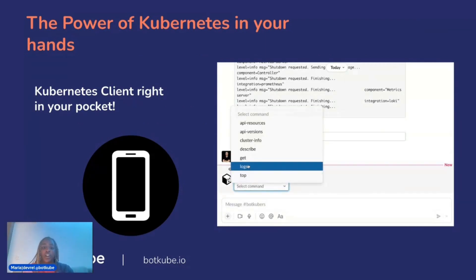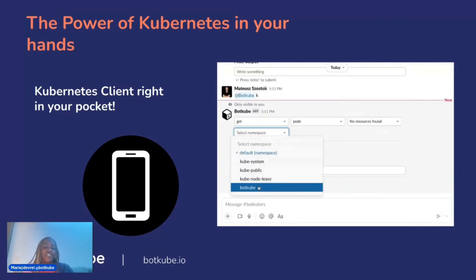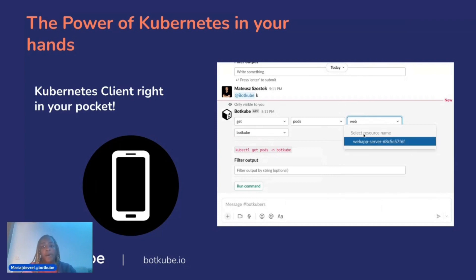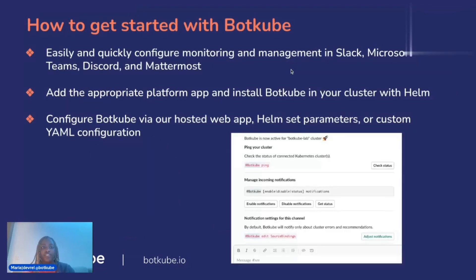Finally, because Botcube is linked into all major messaging platforms, you're able to take it anywhere — whether that's a concert, Starbucks, or anything else. You can easily go to Botcube.io and sign up and connect via the cloud application. All you need is your Slack app token and bot token, and you're good to go. Botcube works with Slack, Microsoft Teams, Discord, and Mattermost. You can install your Botcube cluster with Helm and configure everything via the web-hosted app.